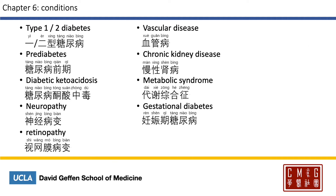Let's talk about diabetes. Type 1 or type 2 diabetes will be 一型糖尿病 or 二型糖尿病. Prediabetes is 糖尿病前期. Diabetic ketoacidosis is 糖尿病酮酸中毒, and 酮酸 is ketoacid. Neuropathy is 神经病变 — remember, it's never 神经病. Retinopathy is 视网膜病变, and 视网膜 is the retina. Vascular disease is 血管病. Chronic kidney disease is 慢性肾病. Metabolic syndrome is 代谢综合症 — remember that 三高 is another Chinese term for metabolic syndrome. Gestational diabetes is 妊娠期糖尿病.